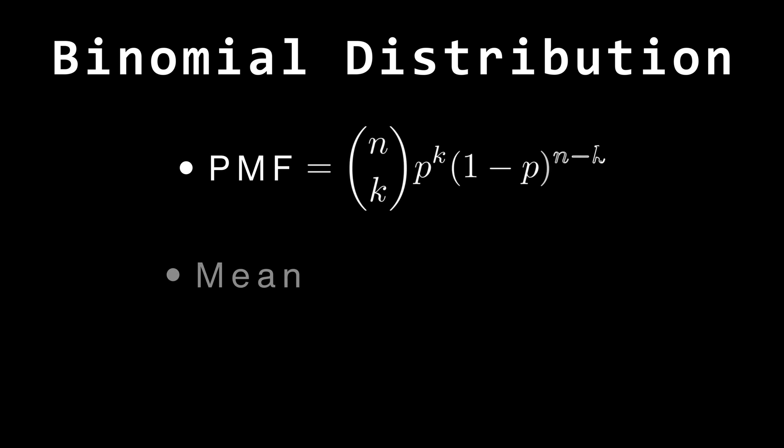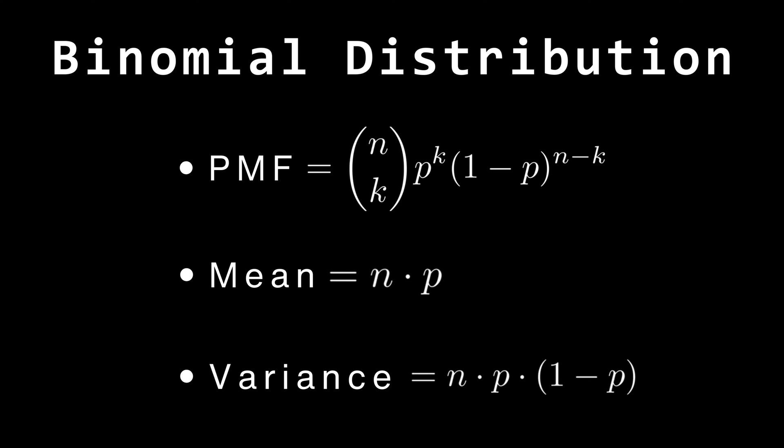With this, we have completed all the most important concepts of binomial distribution: the probability mass function, the mean, the variance, and most importantly, how a discrete binomial distribution converts itself into the normal distribution. Thank you, and have a nice day.